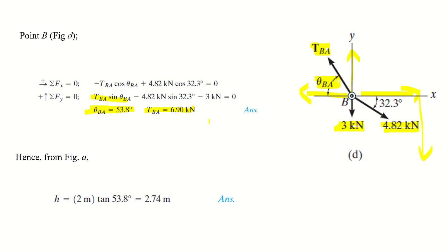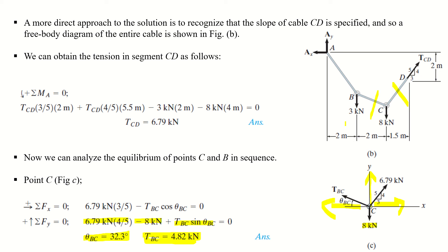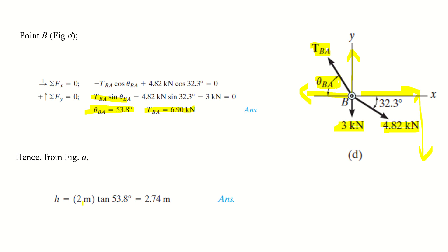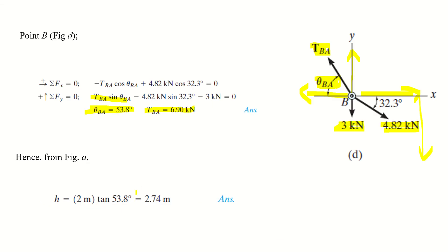We have now determined the tension in all three cable segments: T_CD = 6.79 kN, T_BC = 4.82 kN, and T_BA = 6.9 kN. The only remaining unknown is h. From the geometry of the figure, h = 2 × tan(53.8°), which gives h = 2.74 m. This completes the solution for the concentrated load case.